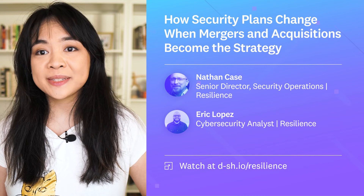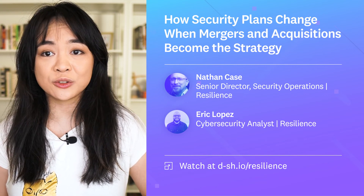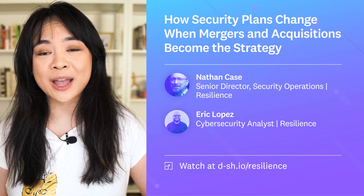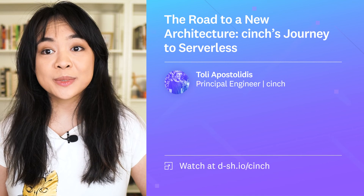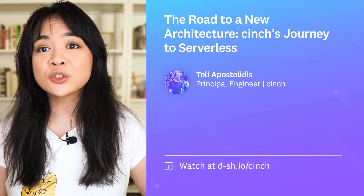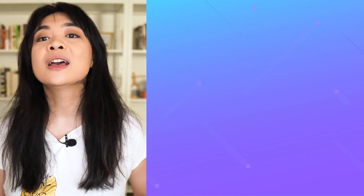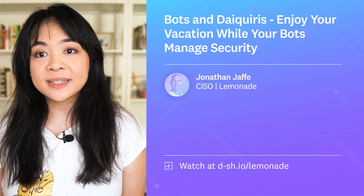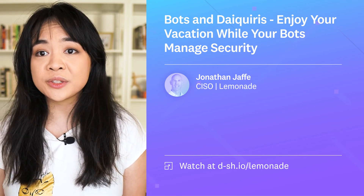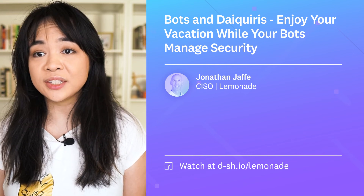Nathan Case and Eric Lopez from Resilience spoke about how security strategies evolve alongside shifting organizational structures, and how they found visibility quickly during mergers and acquisitions. Toli Apostolidis from Cinch explained how his team moved to a serverless architecture and shifted towards an observability mindset, which informed their approach towards migration. Jonathan Jaffe from Lemonade presented his security team's automated Level 1 security remediations, showing how his team uses Torq and Datadog to automate incident responses to website attacks, phishing, and more.